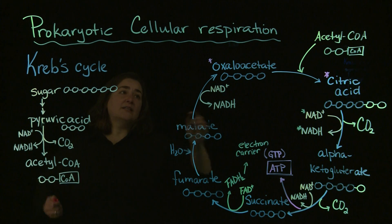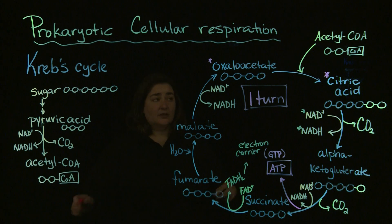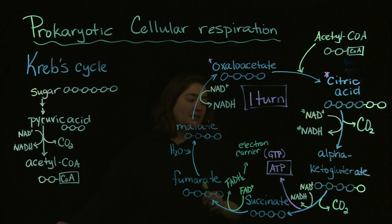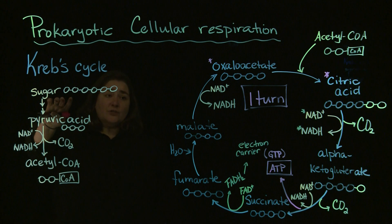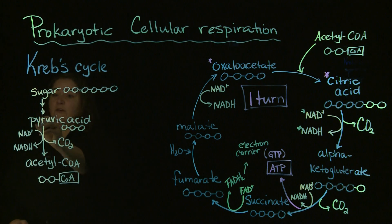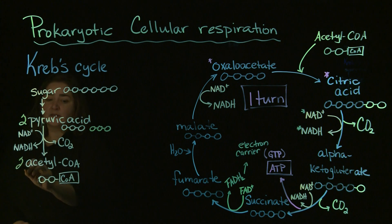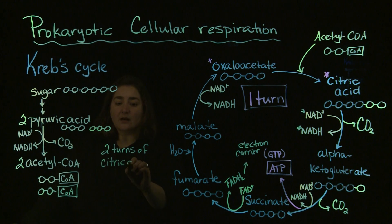One thing to keep in mind: we just took one turn of the citric acid cycle. We had one acetyl-CoA that fed into our citric acid cycle to give us essentially 3 NADH out, two carbon dioxides, one FADH₂, and one ATP. However, remember from glycolysis we split that sugar into two pyruvic acids, so we had two molecules. Those two pyruvic acids generate two acetyl-CoAs, meaning we get two turns of our citric acid cycle per glucose molecule.